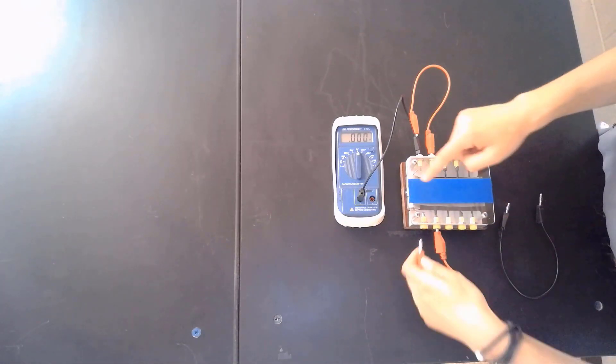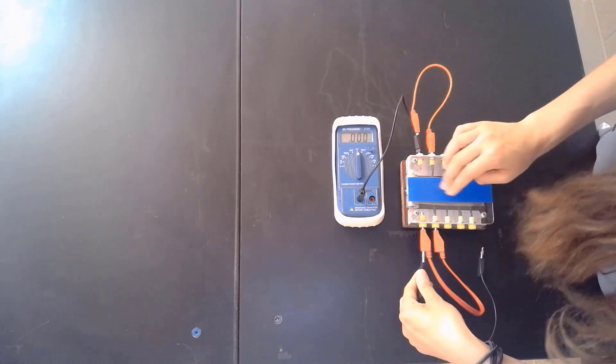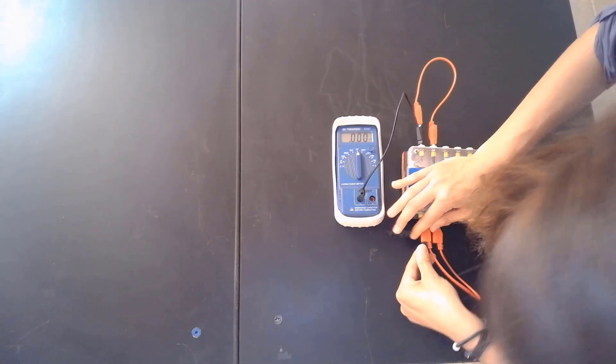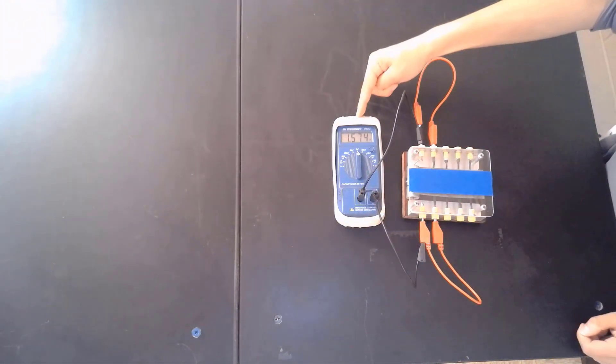So everything that comes out here can go across C1, or it can go back to the beginning. And there's your equivalent capacitance for the parallel circuit.